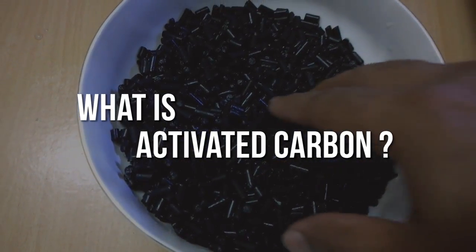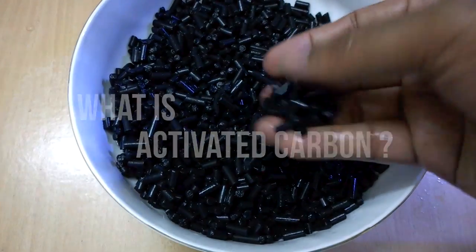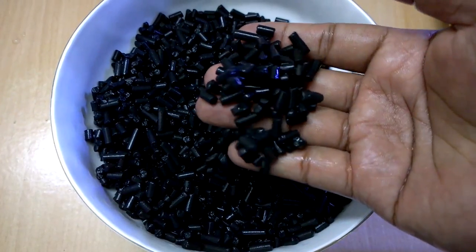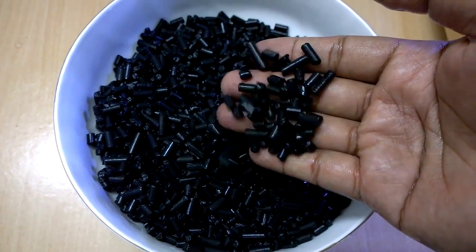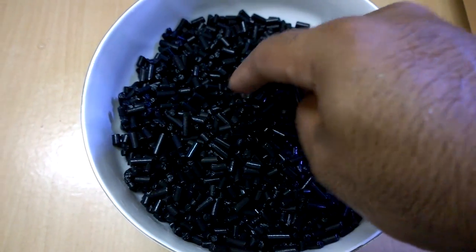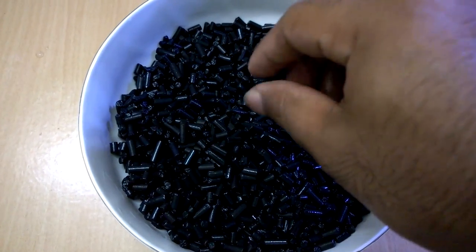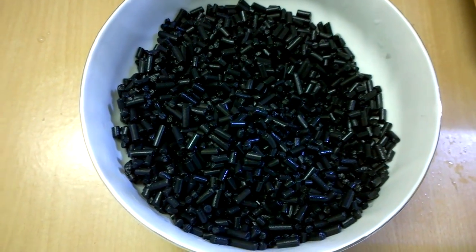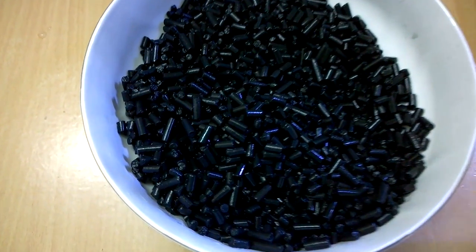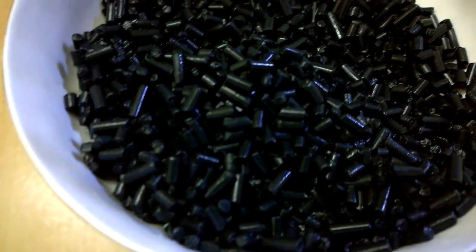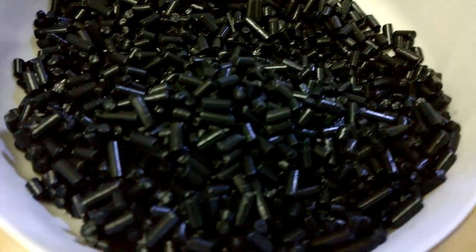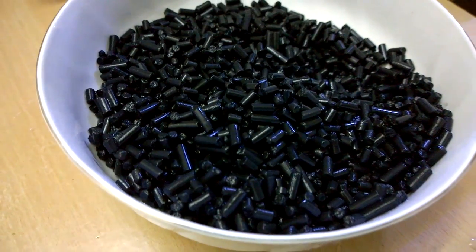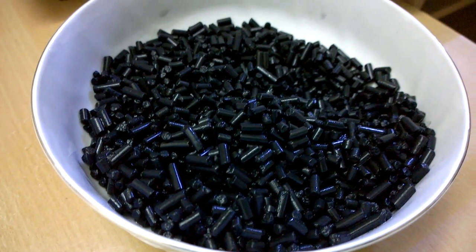First of all, what is activated carbon? Activated carbon is a form of carbon used as filtration media. It helps to remove pollutants from water, makes the aquarium water clear, and also removes odor. It is often used in filtration media for clearing aquarium water and reducing toxicity.